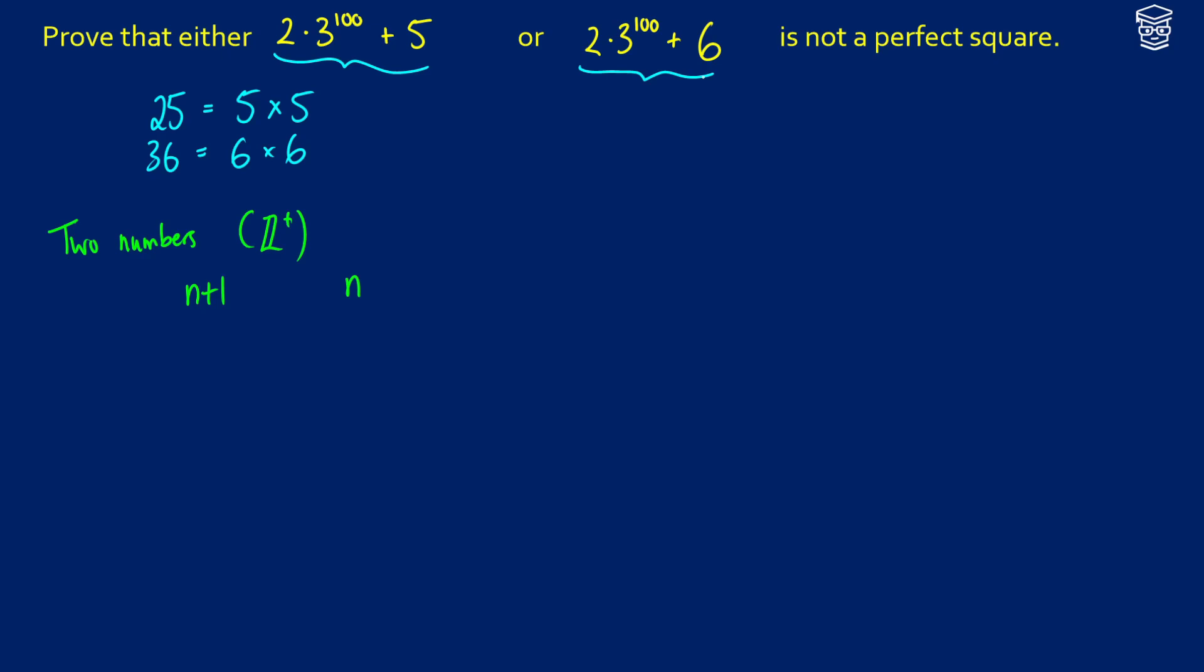2 times 3 to the 100 plus 5, and 2 times 3 to the 100 plus 6. So we're just looking at the difference between those two numbers.